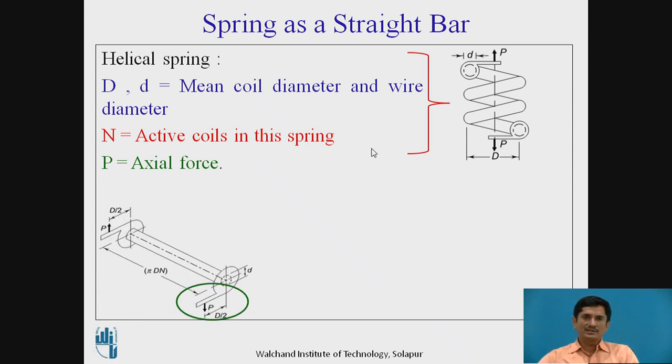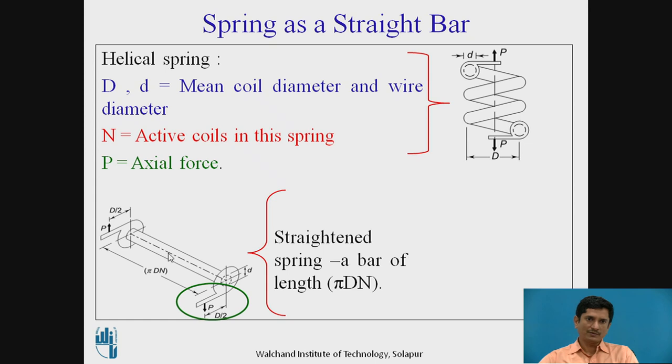It can be assumed as a straight bar, a straightened bar of length pi DN. If I extend this spring, if I make it straight, it will be a bar of length equal to pi DN. Further we are going to assume that this bracket is attached at the distance D by 2 to the end of the spring, and a torsional moment is applied at the end of the bar formed from the spring.